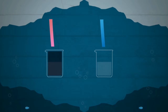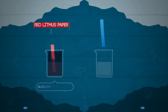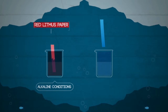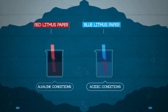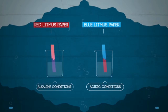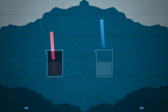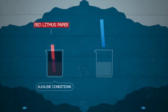Red litmus paper changes color from red to blue under alkaline conditions, but shows no change under acidic conditions. Remember: red litmus paper changes color for alkaline, and blue litmus paper changes color for acid.